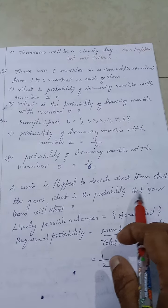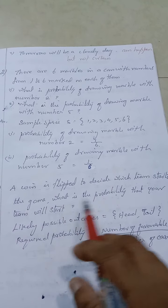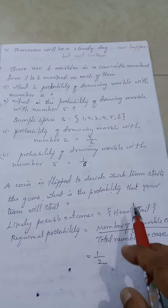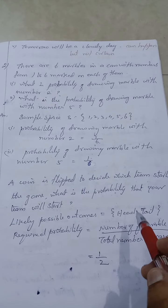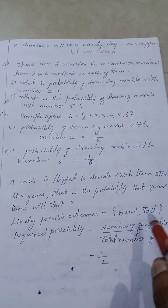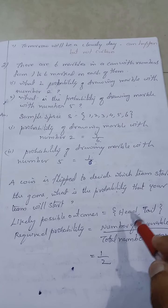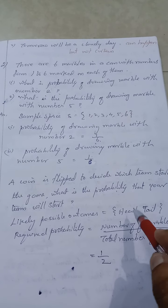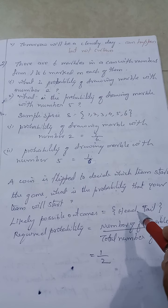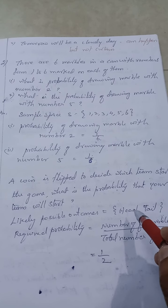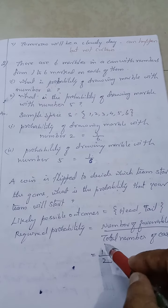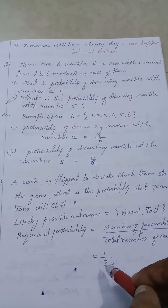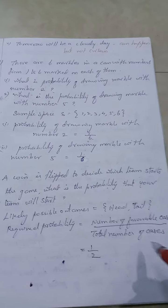Now let us see the third one. What is the third question? A coin is flipped to decide which team starts the game. So can you predict which team will start? When I'm tossing a coin, which are the sides I'll be getting? Head and tail. So I'm asking, I'm saying that I want head. What is the chance that I'm getting a head?